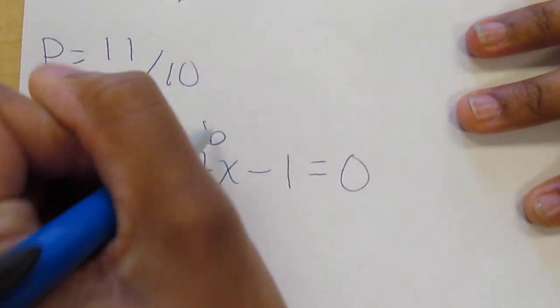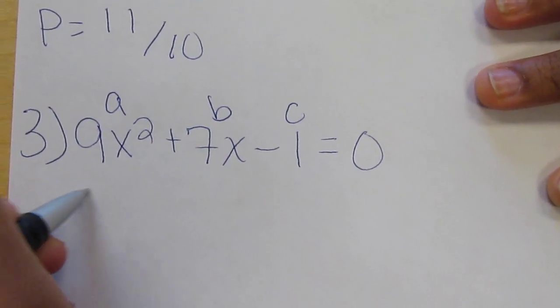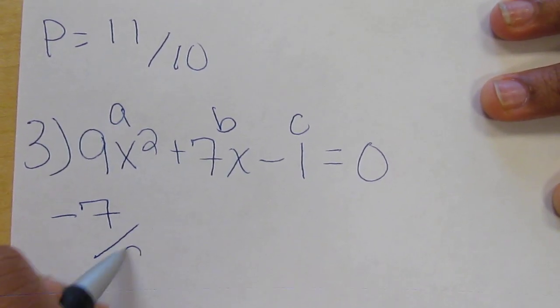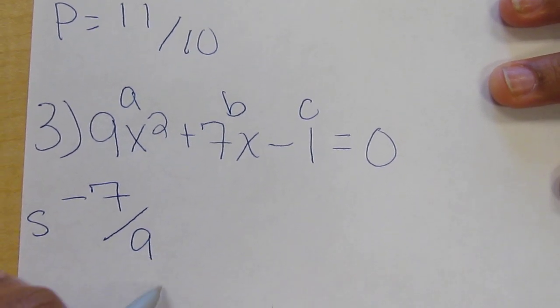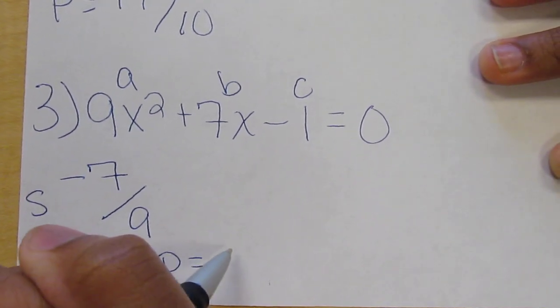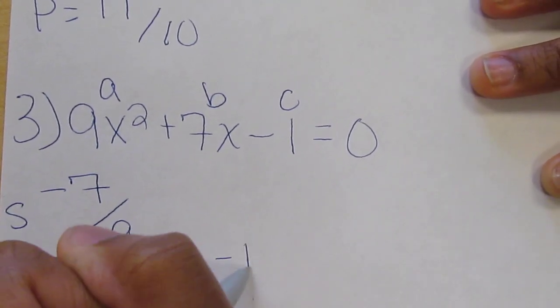A, B, and C. Negative B over A is the sum. And the product equals C over A.